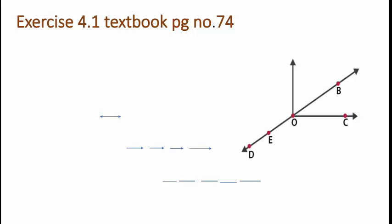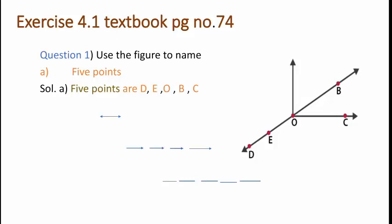Look at the figure given on the screen. For this figure, you have to name five points. First, what is a point? A point in geometry is a location — this we know. So for the given figure, the five points are: point D, point E, point O, point B, and point C.